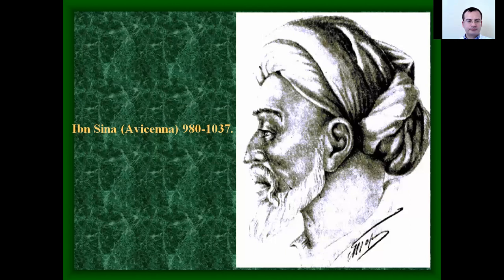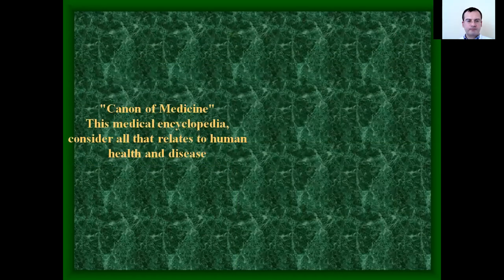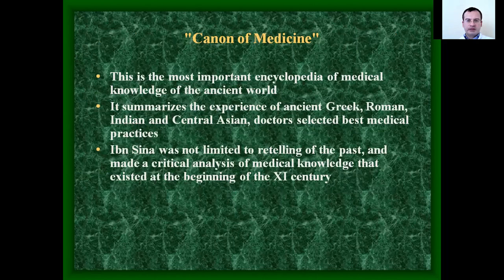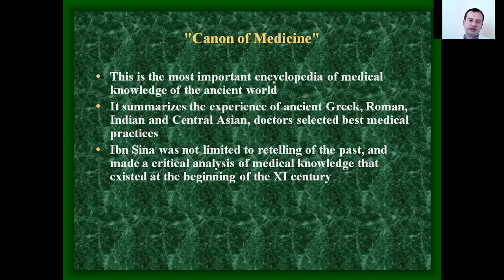Avicenna's famous book, the Canon of Medicine, is the most important encyclopedia of medical knowledge of the ancient world. It summarized the experience of ancient Greek, Roman, Indian, and Central Asian doctors. Ibn Sina was not limited to retelling the past but made a critical analysis of medical knowledge that existed at the beginning of the 11th century.